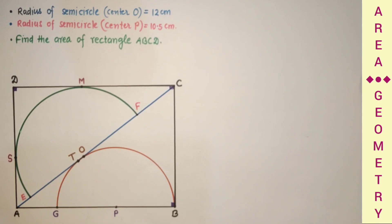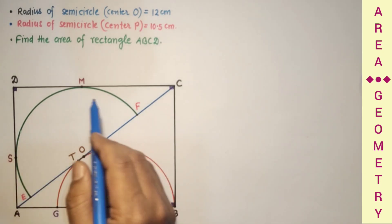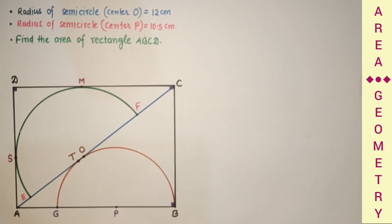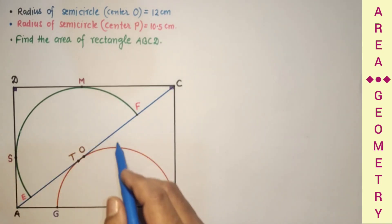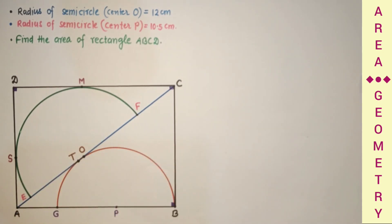ABCD is a rectangle. AC is a diagonal. A semicircle with center P touches this diagonal at point T, and a semicircle with center O touches the two sides of the rectangle: AD at S and DC at M. The radius of the first semicircle is 10.5 cm, while the radius of the bigger semicircle with center O is 12 cm. We have to find the area of the rectangle ABCD.